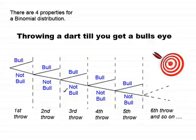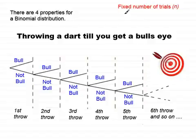Trials are the sections in between the dotted lines, representing in this example the first throw, the second throw, the third throw, and so on. The first property of a binomial distribution is that we have a fixed number of trials, n. This model does not fit a binomial distribution because it has an infinite number of trials.